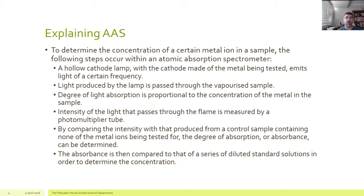The main components of atomic absorption spectroscopy then are the hollow cathode lamp, which has the metal that we're testing, which we said in the previous example is calcium. The light that's given off by this lamp, which passes through the vaporized sample. The amount of absorption is proportional to the concentration of the metal, which means when we plot it, we get a straight line graph.